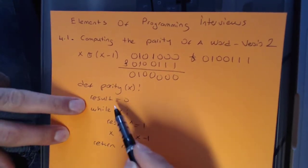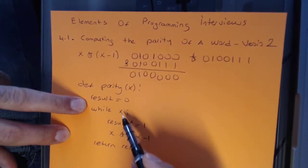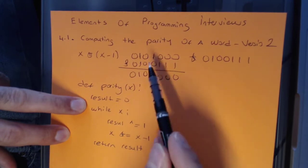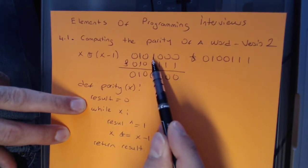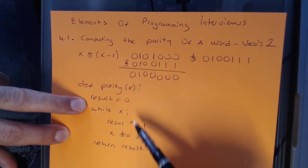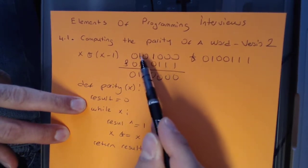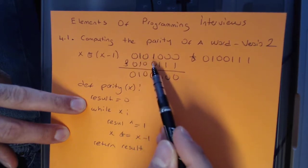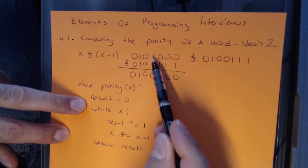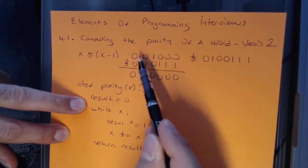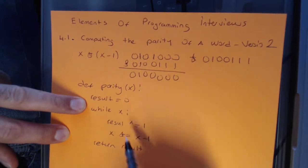So what happens is as we are iterating through X, in each iteration we are going to unset a set bit. So what that means is every time we are iterating, we are actually not going through each bit, we are actually going through each set bit. So in this particular example, we are going to iterate through twice. We are going to unset this bit and we are going to unset this bit.